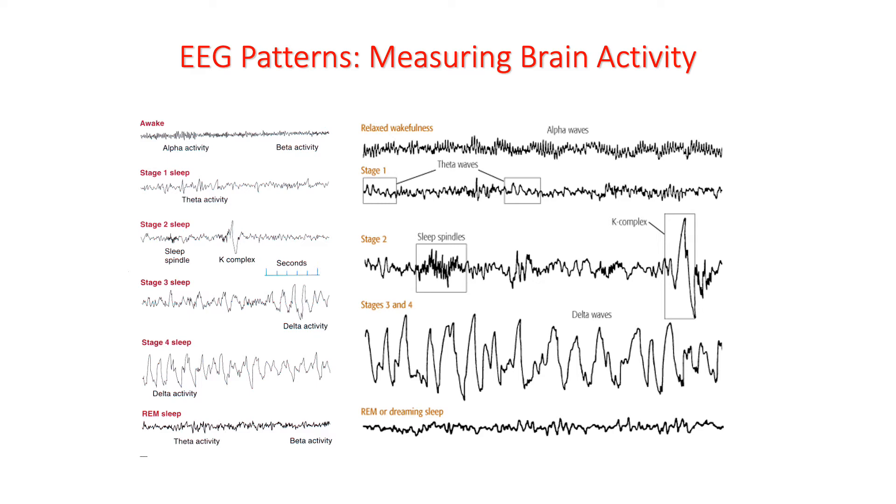The brain waves in stage one sleep look a lot like alpha waves, but you get these little bursts of what are called theta waves that are slightly higher in amplitude and lower in frequency. And that's an indication that the person is no longer just awake and relaxed, but they're starting to drift into sleep.